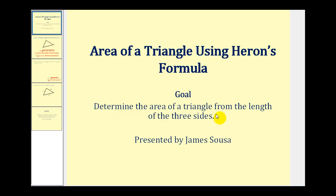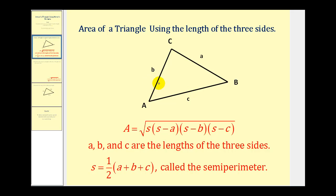Welcome to a video on the area of a triangle using Heron's formula. The goal of the video is to determine the area of a triangle from the length of the three sides. If we have any triangle with sides of length a, b, and c, and we let s equal the semi-perimeter or half of the perimeter, then the area equals the square root of s times (s minus a) times (s minus b) times (s minus c). This formula can be proven using the Pythagorean Theorem, but in this video we're just going to look at some examples on how to apply it.